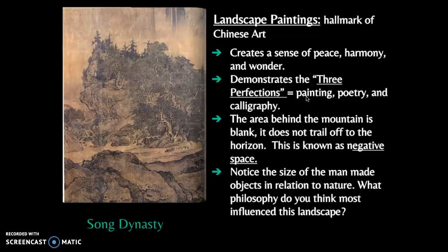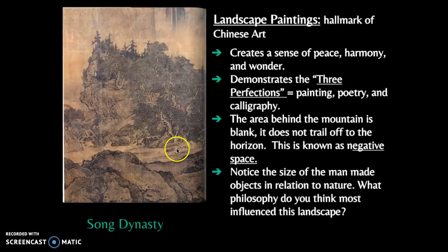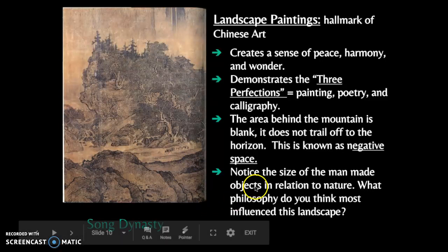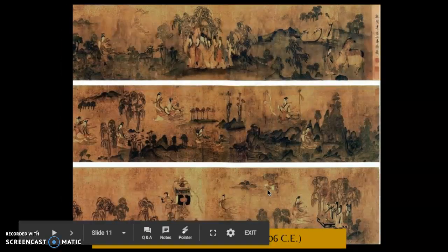Something interesting in the landscape painting is the role of the blank space — it doesn't trail off into a horizon the way we might see in Western European paintings. This becomes negative space. What is that trying to symbolize? What role does nature have in Chinese society? Notice animals and man-made objects in the paintings — how do they compare to the nature around them? The answer ties back to Taoist philosophy.